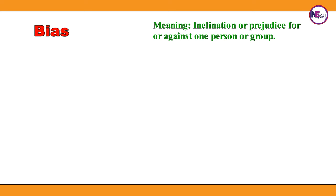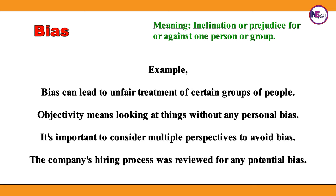Bias: inclination or prejudice for or against one person or group. Bias can lead to unfair treatment of certain groups of people. Objectivity means looking at things without any personal bias. It's important to consider multiple perspectives to avoid bias. The company's hiring process was reviewed for any potential bias.